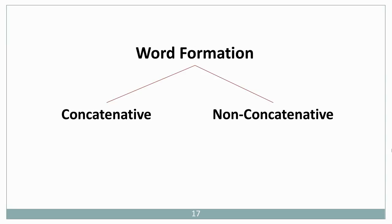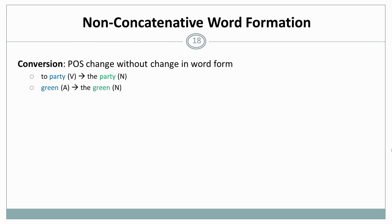Finally, let's look at non-concatenative word formation. There are three subtypes. Conversion, clipping, and blending. Conversion is a change in part of speech without change in word form. So, for example, to party, the verb, becomes the party, the noun. Green, as the adjective, becomes the green, the noun, as in golf.